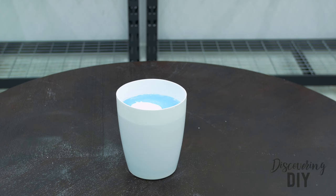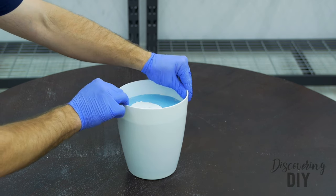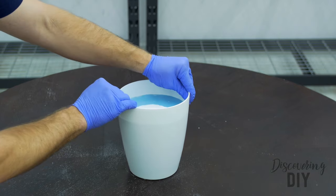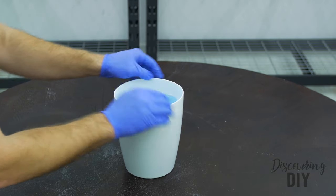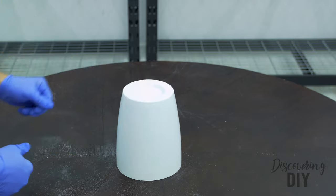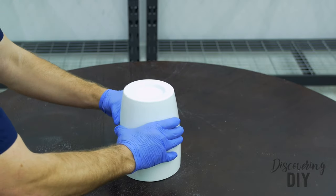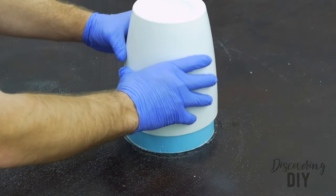After waiting for at least one hour for your casting to harden, it is now time to reveal your casting. Pull on the sides of the bucket, causing the mold to lose suction and release from the bucket. Turn the bucket upside down, gently squeeze on the sides of the bucket, and allow the mold to slide out.